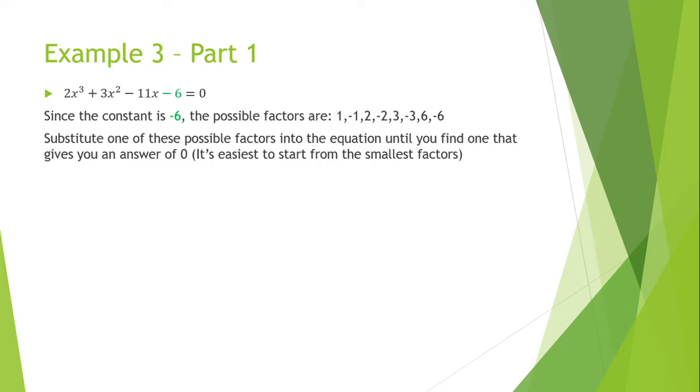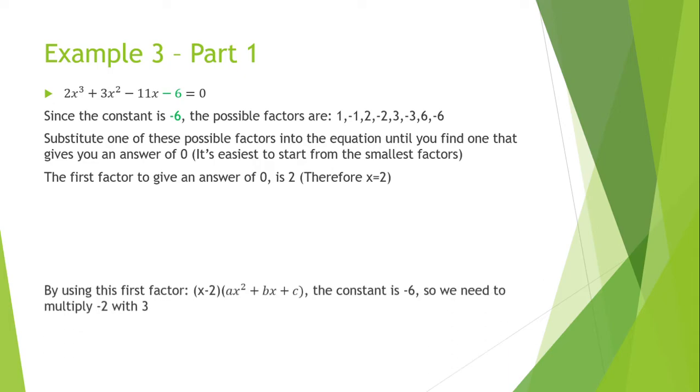For an equation that's higher than degree 2, this is usually the method to take since it's very difficult to immediately see what one of the factors should be. So the easiest way is to just go from the smallest factor that you know and just substitute it into the function and then get the first one that gives you 0. The first factor to give an answer of 0 is 2. Therefore, x equals 2 is our first factor.